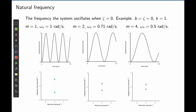Now let's change the mass to see how it affects the natural frequency. With m = 1 kg, ωₙ = 1 rad/s. Increasing the mass decreases the natural frequency. When m = 2, the frequency changes and the poles move closer together on the imaginary axis. When m = 4 kg, ωₙ = 0.5 rad/s and the poles come even closer together. The natural frequency is the frequency of oscillations of the undamped system.